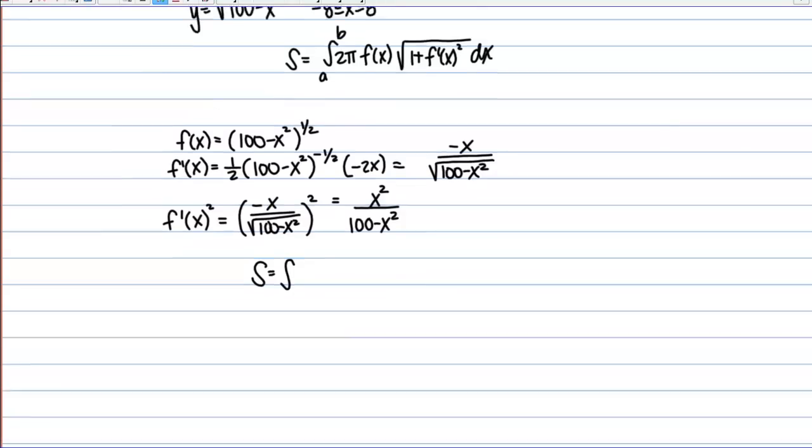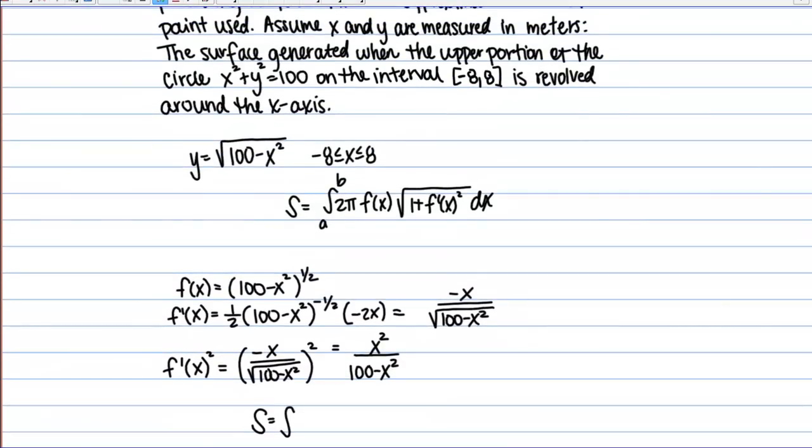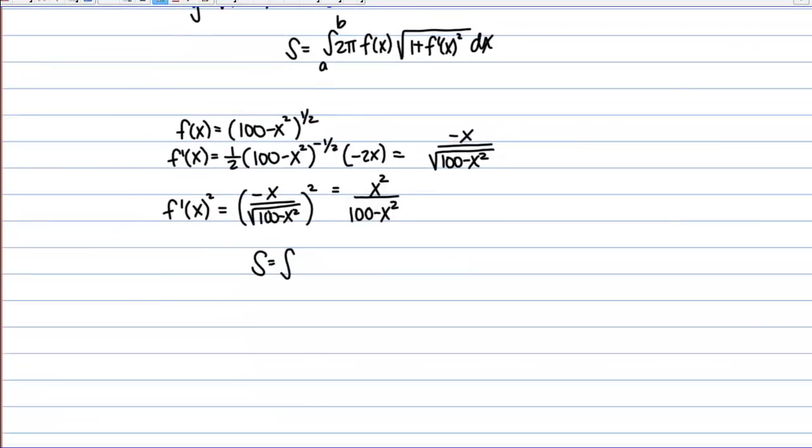The bounds on my integral in this case need to be X values and I'm told that I'm looking at the interval from negative 8 to 8. So, basically, we have two pi square root of 100 minus X squared. And then, square root of 1 plus the derivative squared which was X squared over 100 minus X squared. And we're integrating with respect to X.